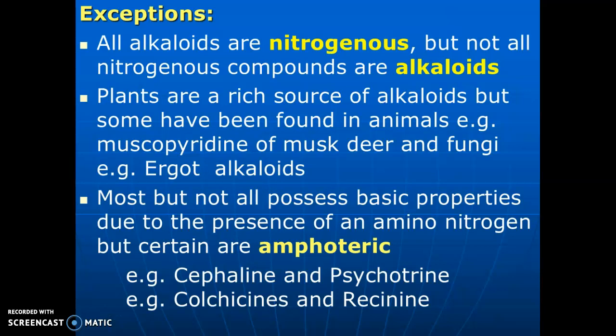All alkaloids are nitrogenous but not all nitrogenous compounds are alkaloids. Plants are the rich source of alkaloids, but some have been found in animals — for example, muscopyridine of musk deer — and some fungi such as the ergot alkaloids. Most, but not all, possess basic properties due to the presence of an amino group, but certain are amphoteric. Examples are cephalin, psychotrine, colchicine, and ricinine.